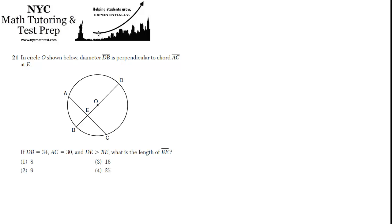In circle O, shown below, diameter DB is perpendicular to chord AC at E. There's a whole set of problems in geometry that deal with this exact situation where you have a diameter, which is a special kind of chord, that runs through the center of the circle. So that's DB. And then you have another chord, which does not run through the center of the circle, which is perpendicular to the diameter. And when this happens, certain things happen, as we'll see as we go through.